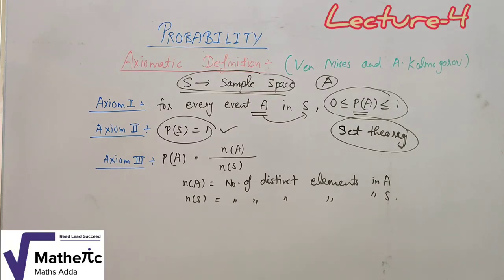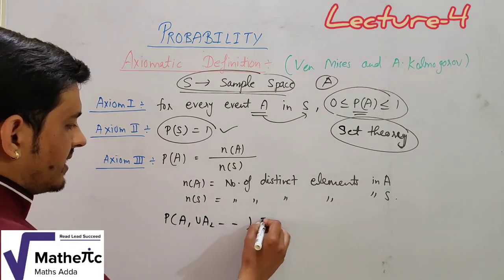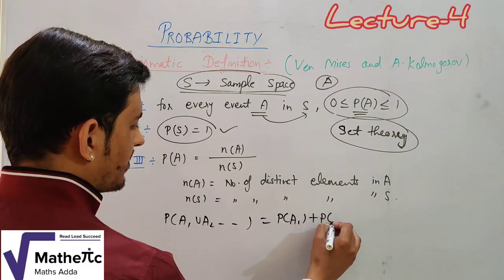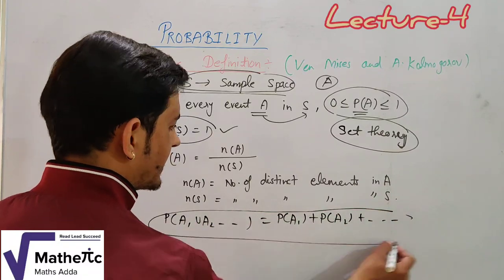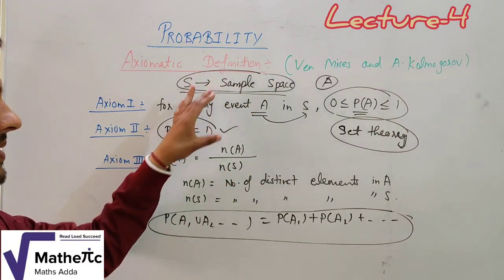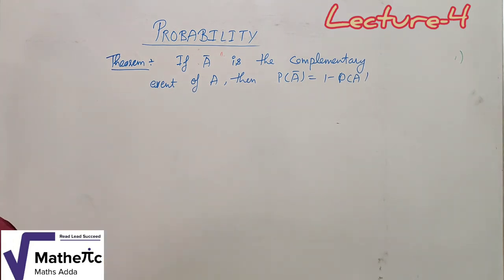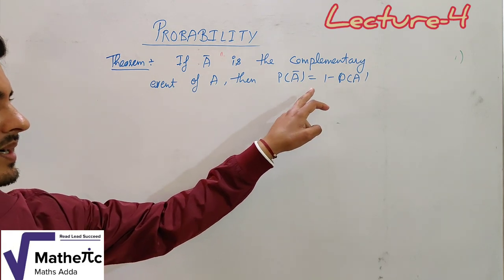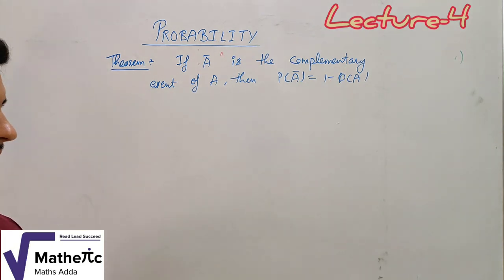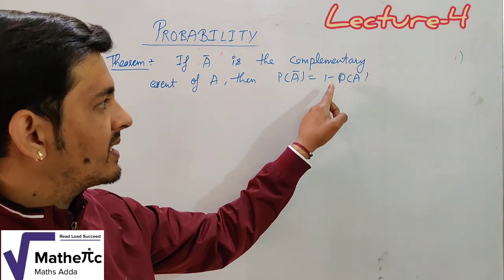Another important condition: if events A1, A2, A3, A4 are mutually exclusive, then the probability of their union equals the sum of the individual probabilities of each event. Using the axiomatic approach and set theory, we can also derive results such as: if A-bar is the complementary event of A, then the probability of A-bar equals 1 minus the probability of A.